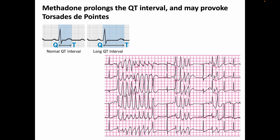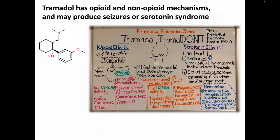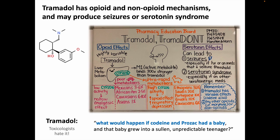Tramadol has both opioid and non-opioid mechanisms that contribute towards analgesia, but it can also contribute towards seizures, especially in overdose, and development of serotonin syndrome. Tramadol has a bad reputation among toxicologists because it's not a reliable analgesic and carries other risks, especially in overdose. One toxicologist I know has written that tramadol is what would happen if codeine and Prozac had a baby, and that baby grew up into a sullen, unpredictable teenager.